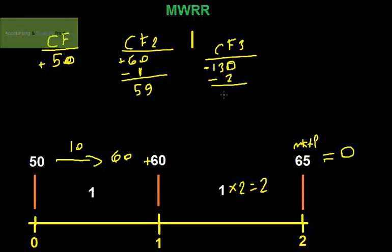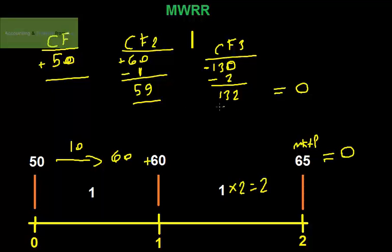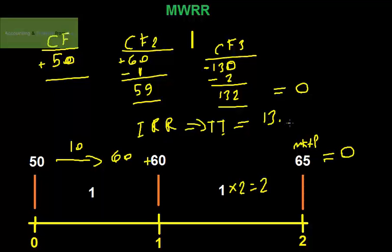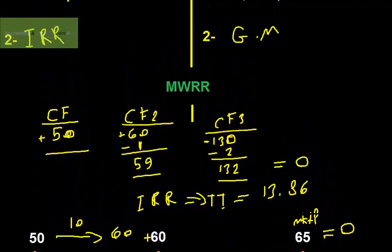We subtract the $2 dividend cash outflow paid to the customer, giving a total of $132. At the end of the period, the value of the account is going to be $0. The discount rate that leads this account to equal $0 is the IRR. Accordingly, we discount all those cash flows to the IRR that leads the result to $0. Using a Texas Instruments calculator, we can compute it easily and get a value equal to 13.86%.